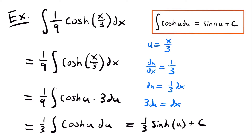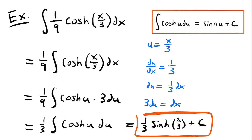We now have an integral that matches our integration rule for the hyperbolic cosine function. This equals one third times hyperbolic sine of u plus c. Replacing u with x divided by 3 gives us the solution to this integral: one third times hyperbolic sine of x divided by 3, plus c.